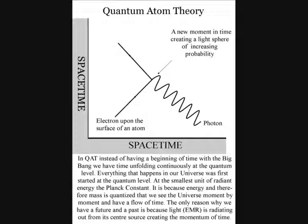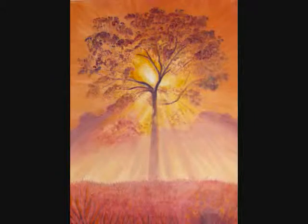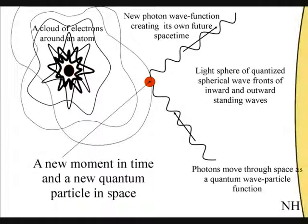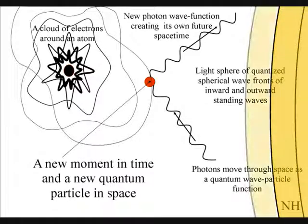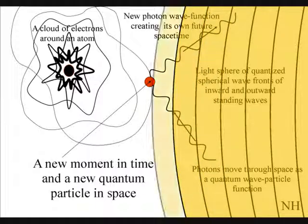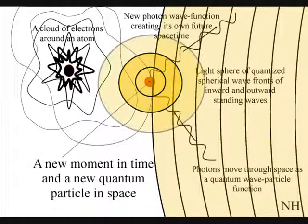From each photon-electron coupling, electromagnetic radiation will radiate out in light spheres of quantised wave fronts. When these wave fronts come in contact with electrons on the surface of other atoms, the wave function will collapse into new quantum particles in the form of a photon that will have its own position in time and space. There is then a quantum leap of energy creating a new wave function of future possibilities.